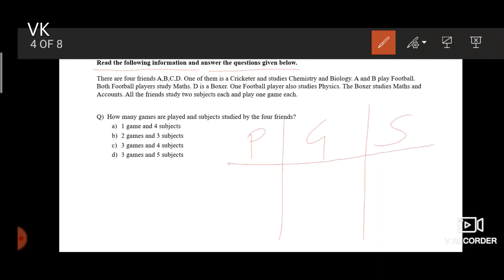A and B play football. Let us take the names of the students. A and B play football. I am considering football as F. Both football players study maths. They study maths. D is a boxer. One football player also studies physics. Either of them studies physics.